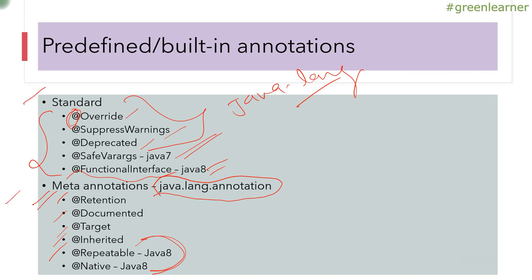What is the difference between standard and meta annotations? Meta annotations are used to create other annotations, whereas standard annotations are used in real-life application development while you are programming.